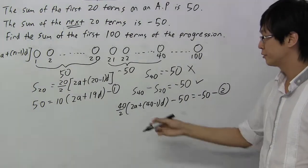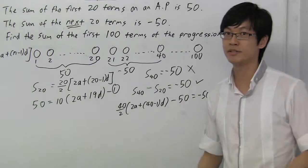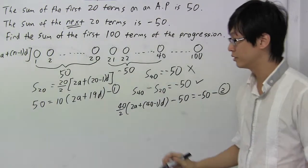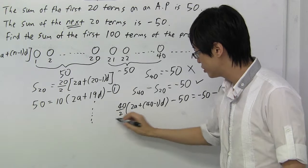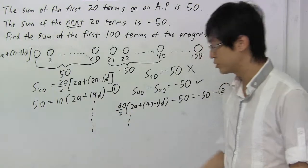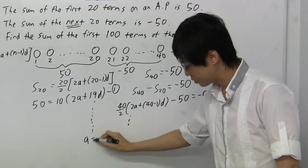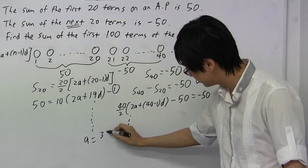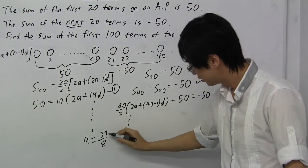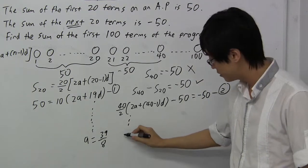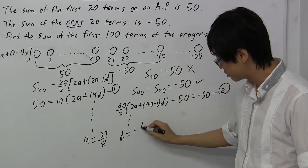So now I've got two equations and two unknowns. It's just a matter of solving simultaneous equation. After you solve simultaneous equation, I don't want to go through the step because I'm sure you are competent enough to solve simultaneous. You'll get A equals to 39 over 8. That means the first term is 39 over 8. And the difference is minus 1 over 4.